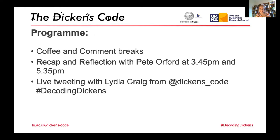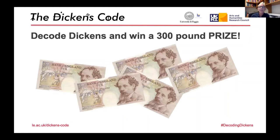Please stick around until the very end — our opening ceremony is miles better than the Olympics. We are very fortunate to have an anonymous donor who has offered a £300 prize for a transcription of one of Dickens's shorthand texts. This is a very generous offer and we hope it will be an incentive for the general public to get involved. If you're the kind of person who likes word puzzles, deciphering strange scripts, and codes, or doing crosswords, this could be for you. We'll be explaining the prize in more detail in the final session.